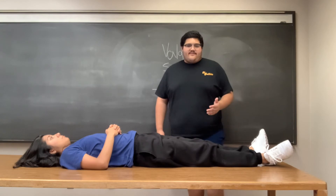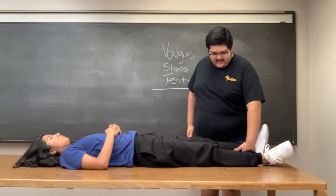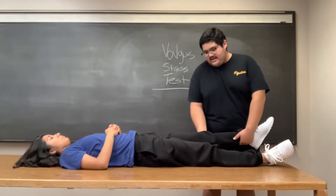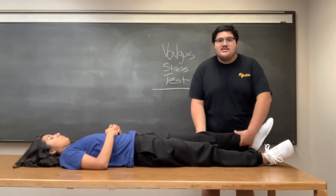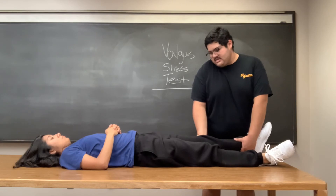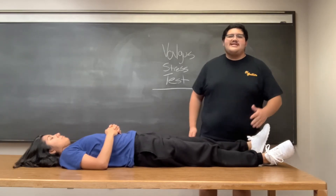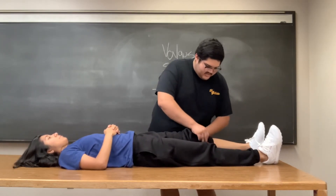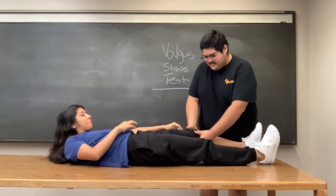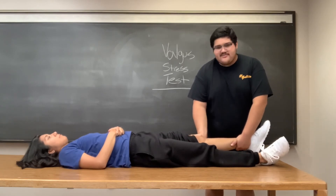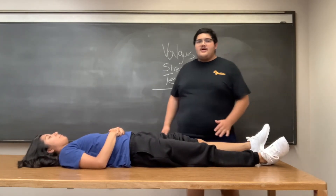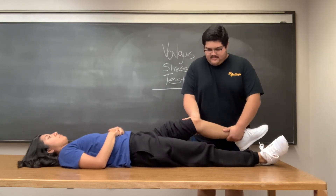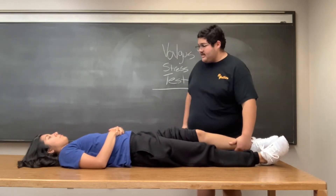First, we will start with the unaffected leg. We will have one hand on the medial aspect of the ankle and our other hand on the lateral aspect of their knee, then apply a valgus force with their leg extended. We are looking for any excessive gapping as well as pain. No excessive gapping; do you feel any pain? No. Then we are going to put the knee in 30 degrees flexion and do the same thing. No gapping observed. Is there any pain? No.